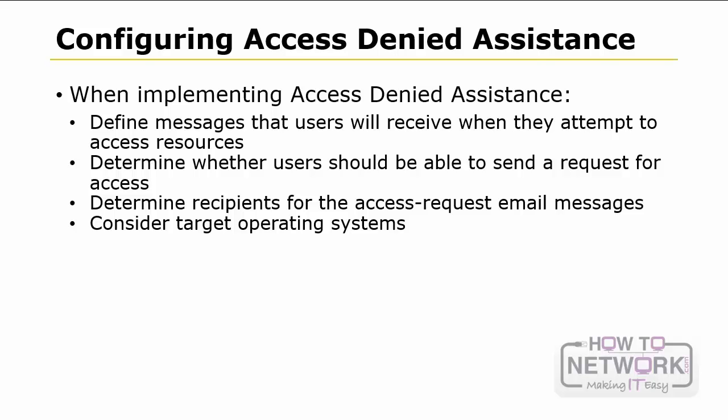The Access Denied Assistance feature provides three ways to troubleshoot issues with access denied errors. The first is self-remediation. Administrators can create customized access denied messages authored by the server administrator. By using the information in these messages, users can try to self-remediate access denied cases. The message can also include URLs that direct users to self-remediation websites provided by the organization.